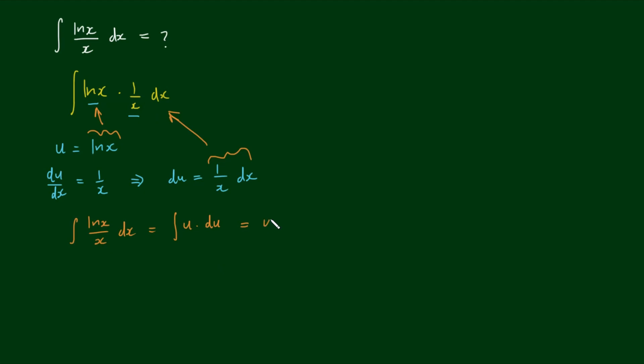Because the integral of u is just u squared—we increase the power by one and divide by the new power, divided by two. And of course, because this is an indefinite integral, we never forget the addition of an integration constant plus c.